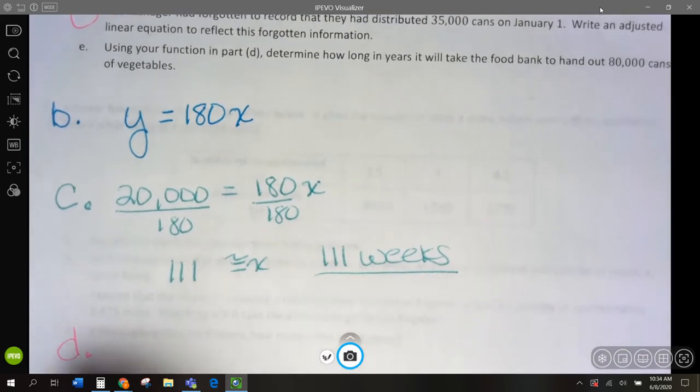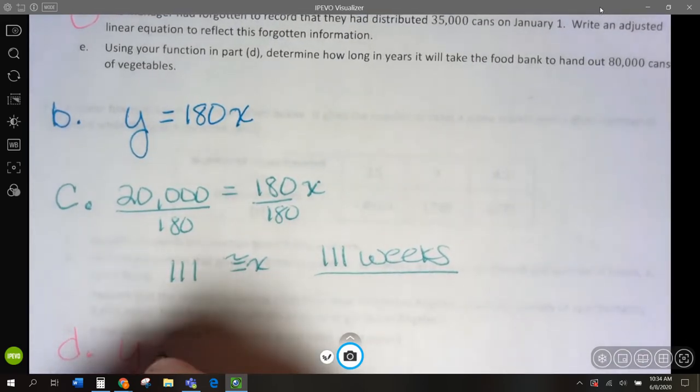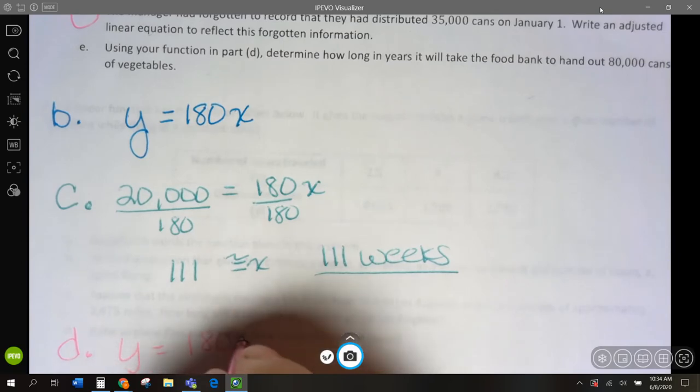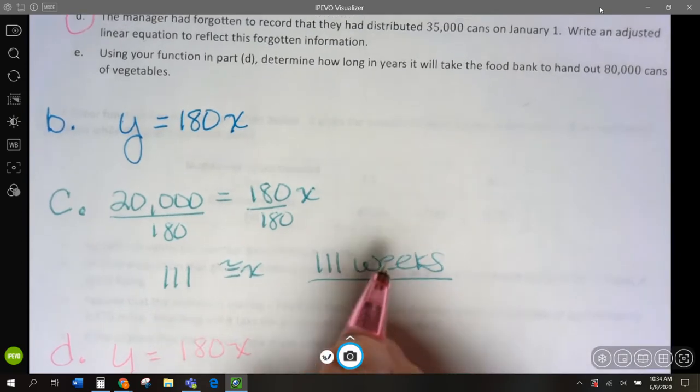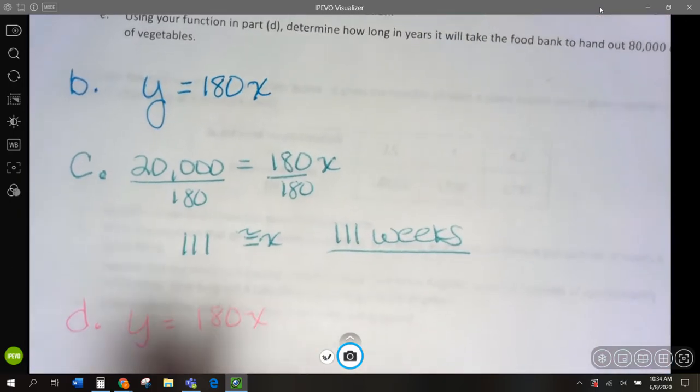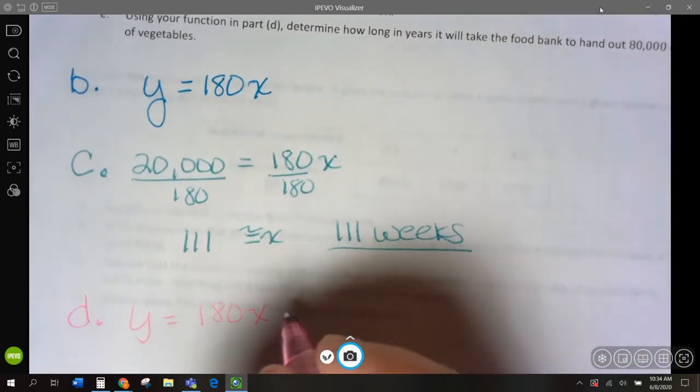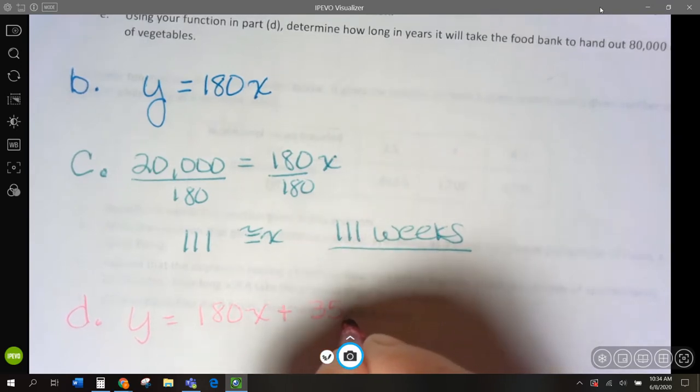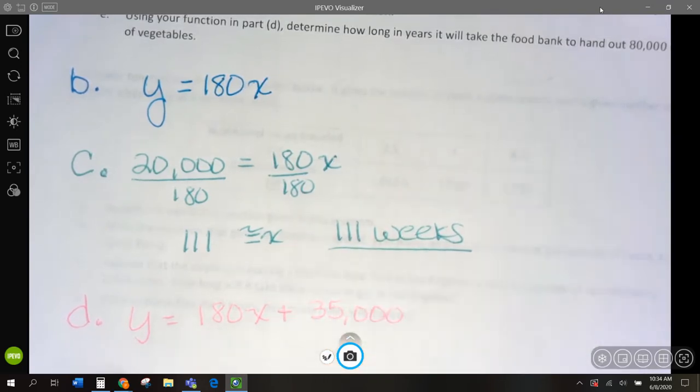Now y still equals that 180 per week. But remember, we already had 35,000 cans distributed. So what do we have to do to this? Add plus 35,000 because we've got to add that to what was already distributed.